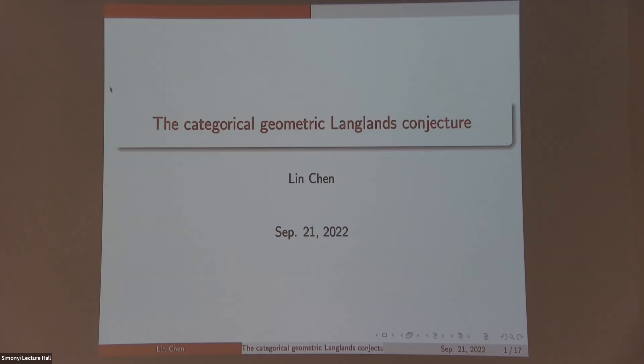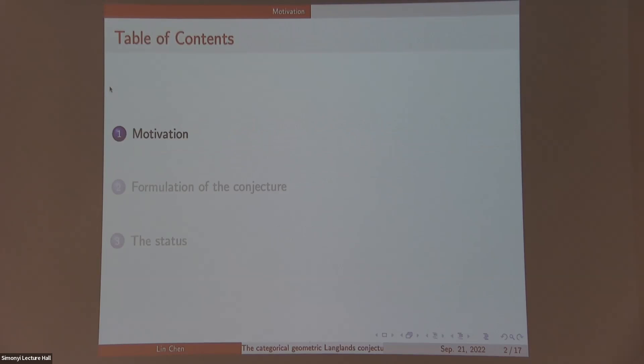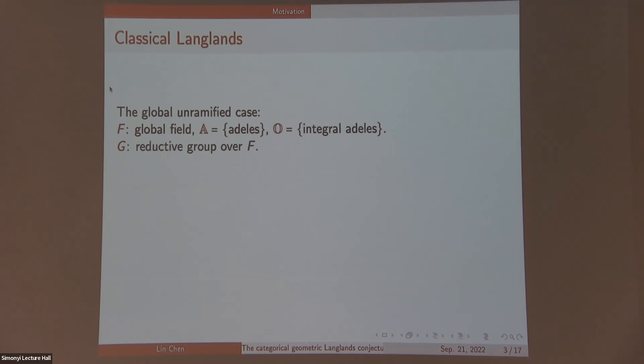Okay, so let's start from the motivation. The motivation comes from the classical Langlands conjecture in number theory. We will only talk about the global unramified case. F will be a global field, A will be the adeles of F, and G will be a reductive group over F.